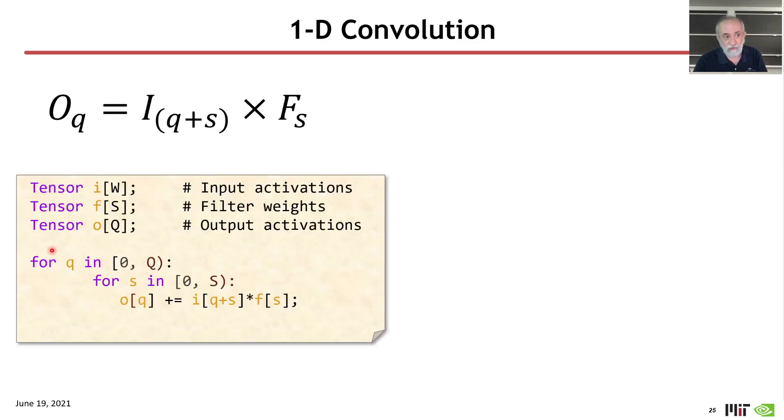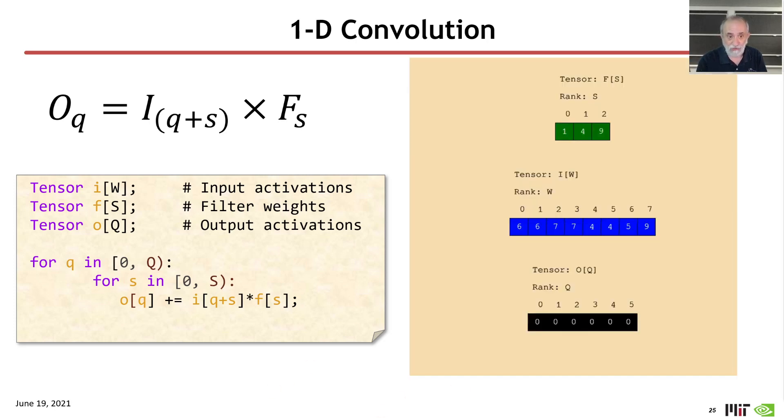And so now we can think about that 1D convolution again, except for now, we can reverse the order of the loops and put Q on top, traversals of Q on top and S in the middle. And so again, we can look at an animation of that, and what do we see? What we see is that we work on a single output continuously, and when we finish that one, we move to the next. And what we're going to do is, while we're working on an output, we're going to work sequentially on each of the weights, and sequentially on each of the input activations in the window associated with the convolution that we're doing.